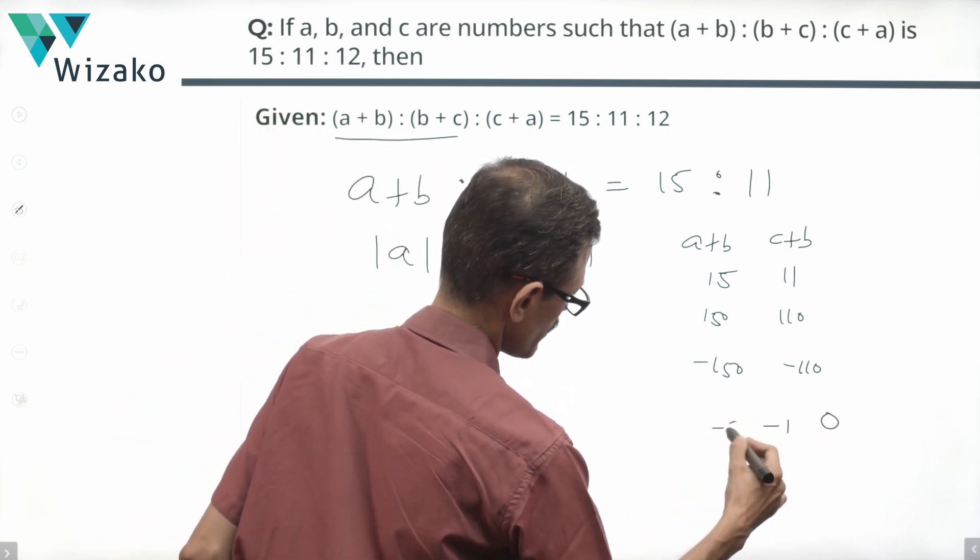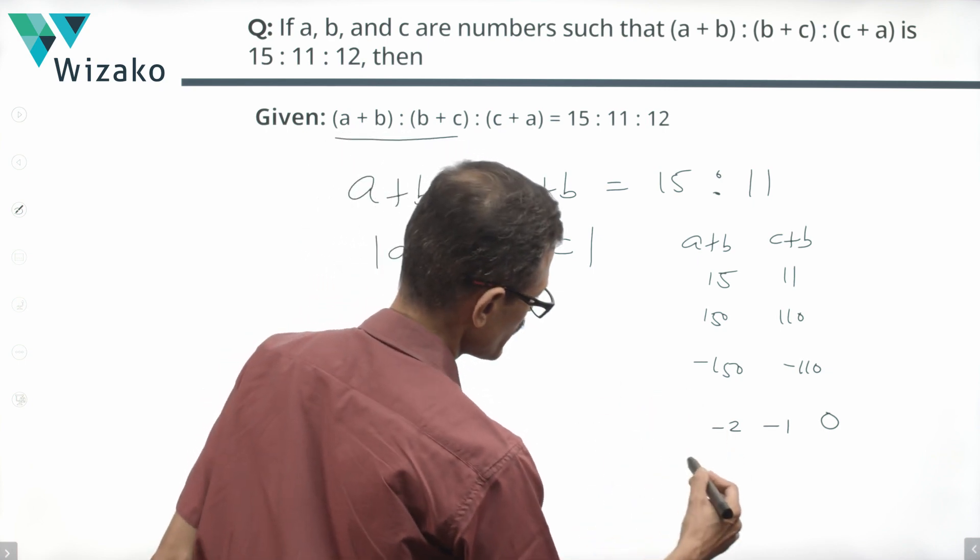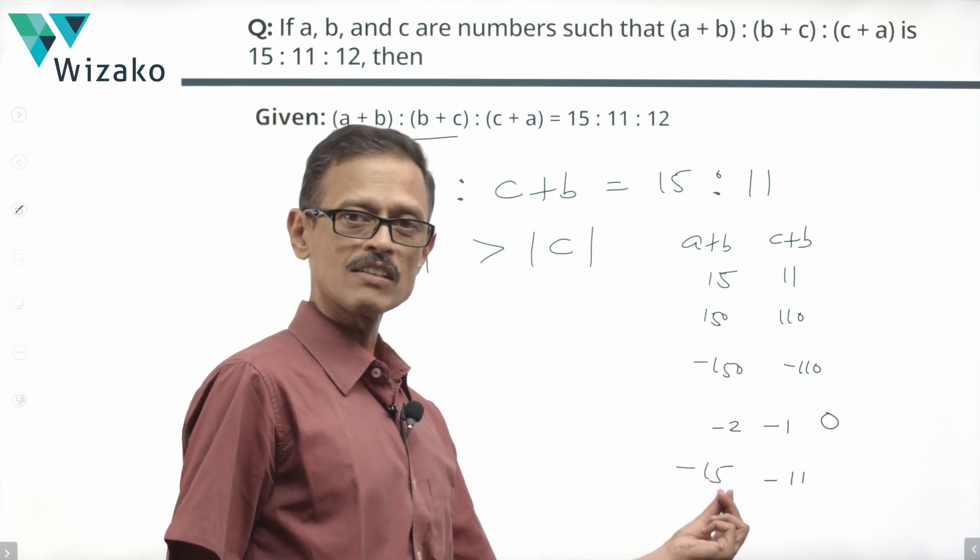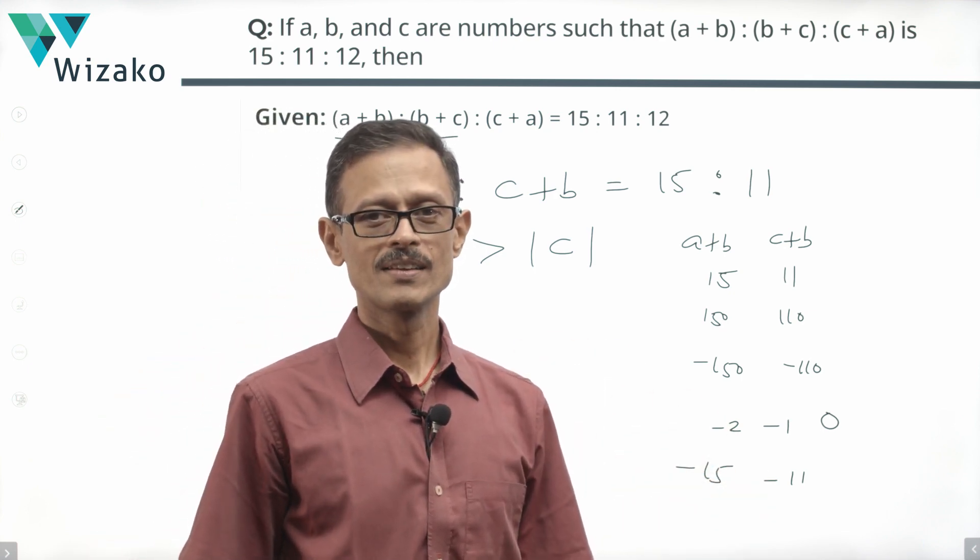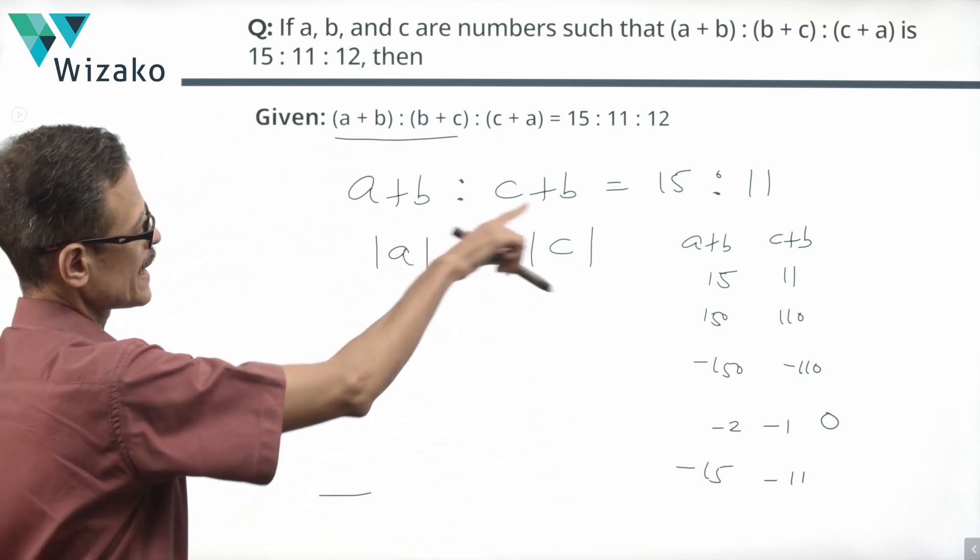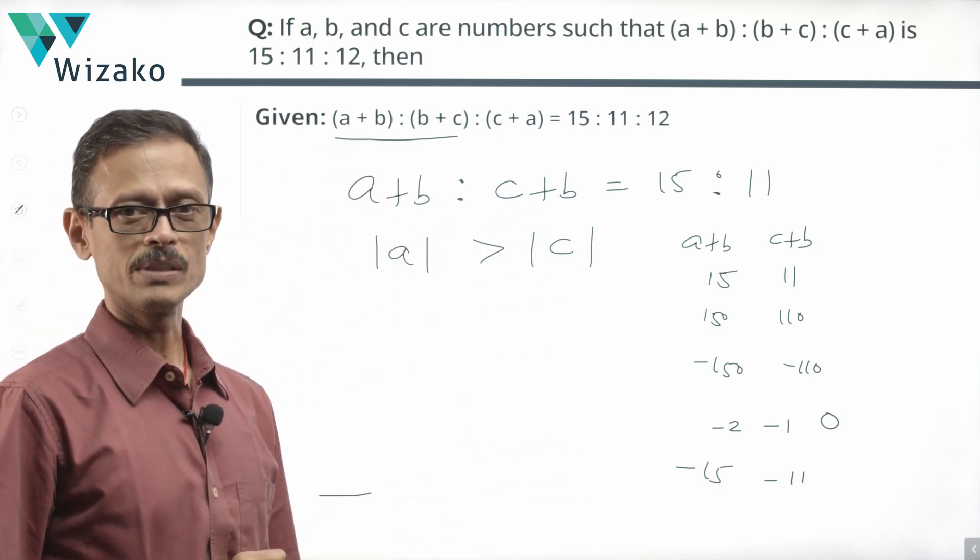0 is here, -1, -2. So where will -15 be? -15 will be to the left of -11, which means that -15 will be lesser than -11. So putting all of these together, at this point, what we can deduce is |a| is greater than |c|.